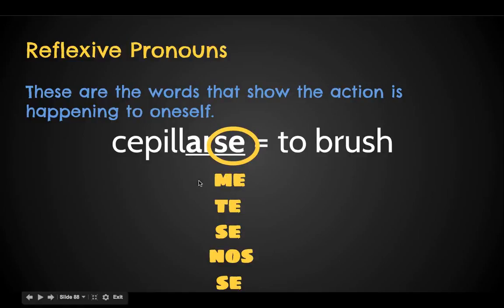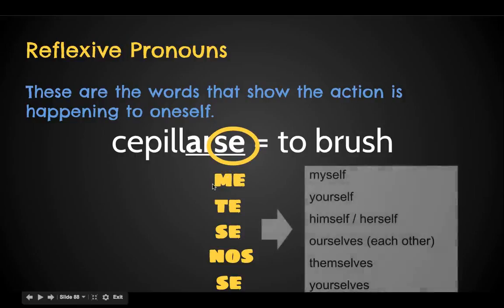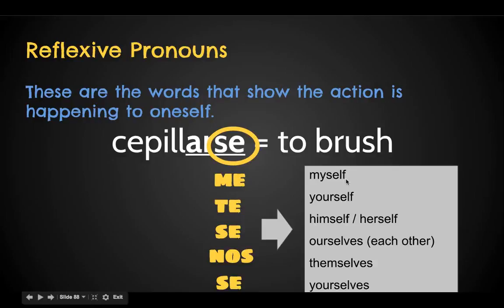that becomes 'me cepillo los dientes.' These words — the reflexive pronouns — basically tell the listener that it's myself, yourself, himself, herself, ourselves, themselves, or yourselves plural.